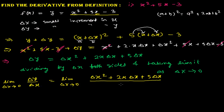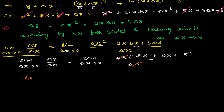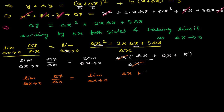On the right-hand side, I can factor out Δx from the numerator: Δx(Δx + 2x + 5) / Δx. The Δx in the numerator and denominator cancel, leaving: lim(Δx→0) of Δy/Δx = lim(Δx→0) of (Δx + 2x + 5).